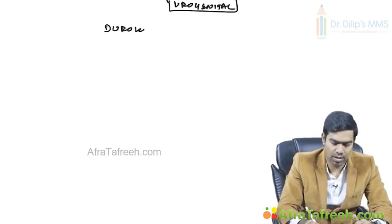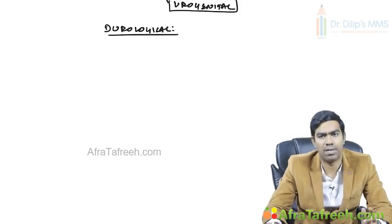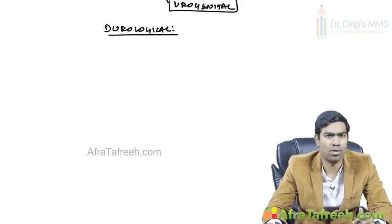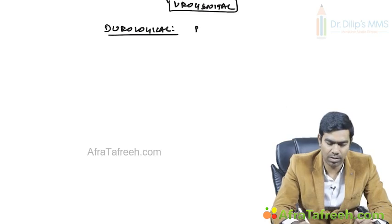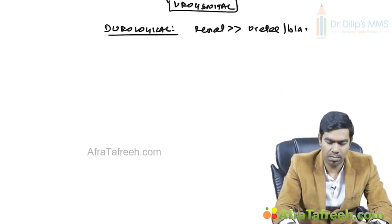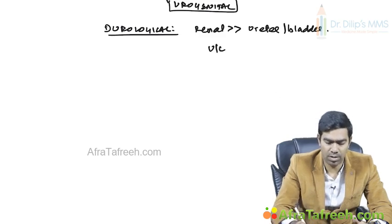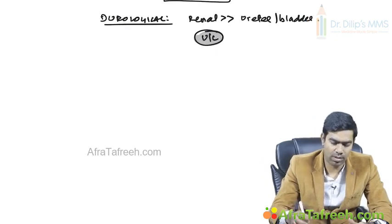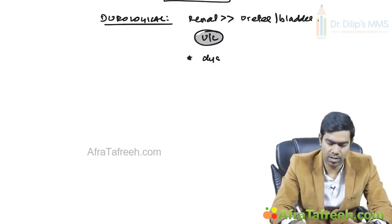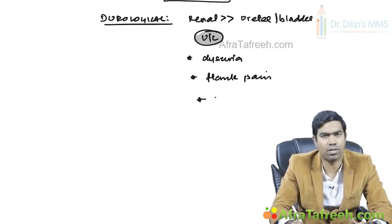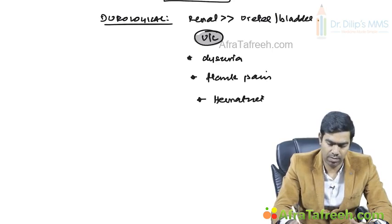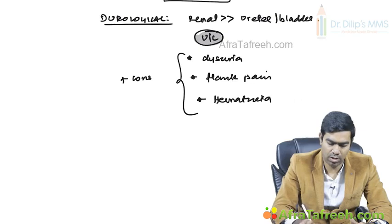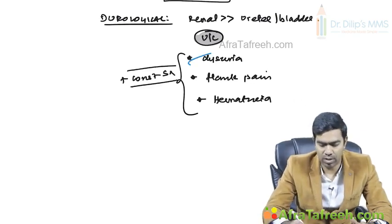Moving to urogenital tuberculosis, this includes urological TB and genital TB - genital TB being very common in females only. In urological TB, the most commonly affected organ is the kidney - renal TB is more common than ureteric or bladder-related TB. Most often, urological TB is unilateral, not bilateral. Typical features include dysuria, flank pain, hematuria, and constitutional symptoms, though these are quite non-specific.